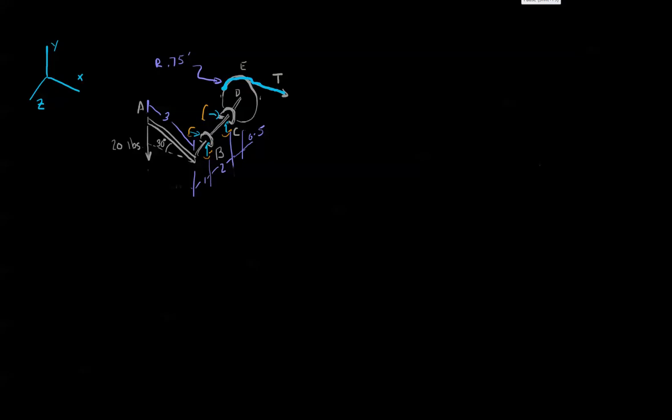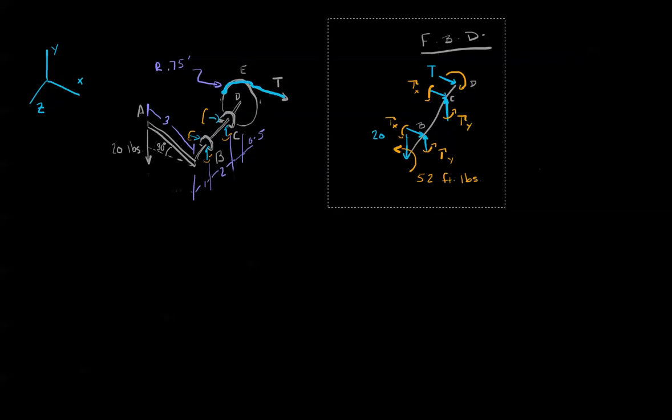Let's pull up the free body diagram. Now you can see that on my free body diagram I have taken off the lever arm and I've also taken off this disc. And the reason I've done that is I like having one long shaft. Now of course I can't just take it off right. I have to use my equivalent systems.